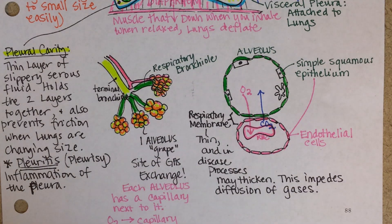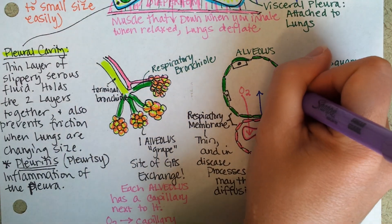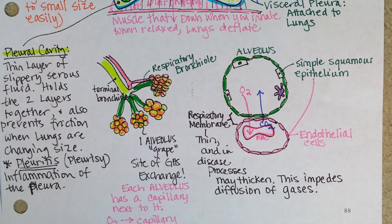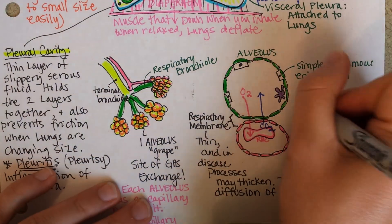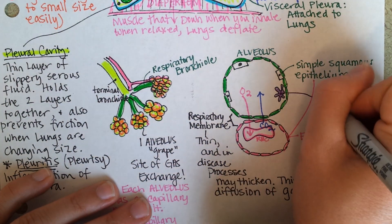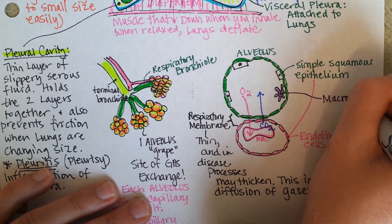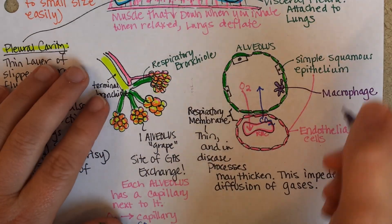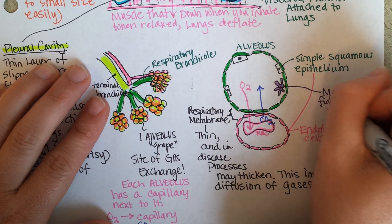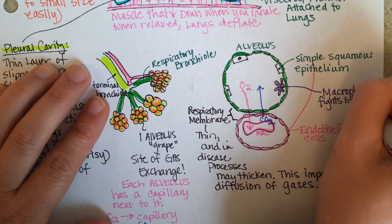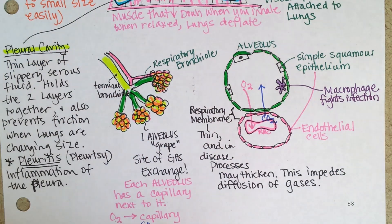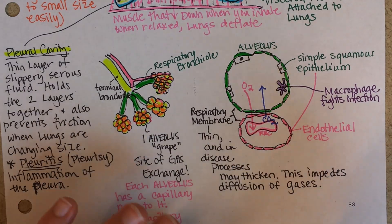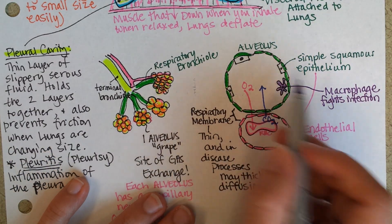Within each alveolus are a couple other kinds of cells. This cute little amoeba-looking cell is actually a white blood cell, or macrophage. That macrophage is going to fight infection — whether that infection is a tuberculosis bacterium or viruses that get inside of the cells.